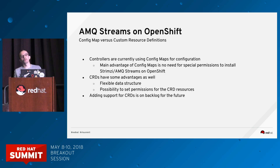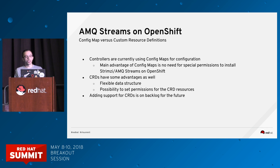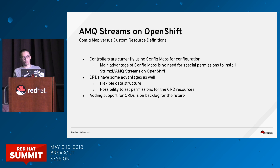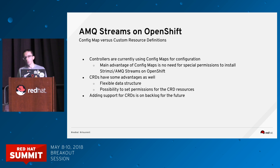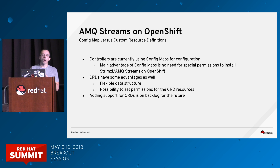Today StreamZ is based on using a ConfigMap to describe the cluster, which has advantages around permissions — no special permissions are needed to install these ConfigMaps. There is another way on the roadmap using CRDs (Custom Resource Definitions), which provides a more flexible data structure for describing the cluster and even topics, and allows setting permissions so users can create topics but not deploy clusters.